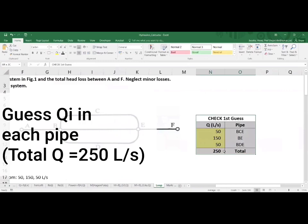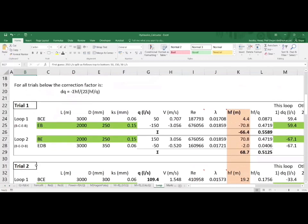Next, we guess the QI values in the three pipes to add up to 250 and then fire away with trial one.